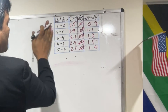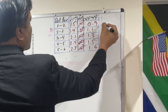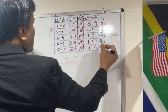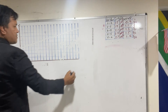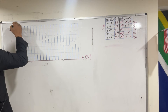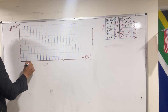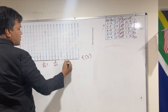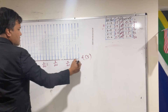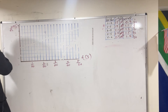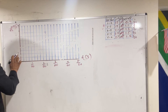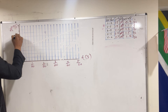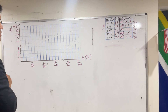Now assigning the time values: the first interval is 1/60 s, second is 2/60 s, third is 3/60 s, fourth is 4/60 s, and fifth is 5/60 s. Setting up the graph axes — velocity goes up to about 1.8 m/s to cover all the values.